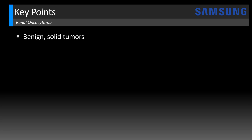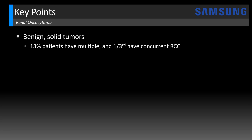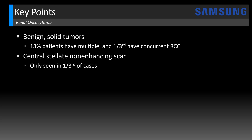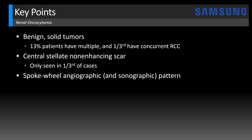Let's look at key points for oncocytoma. These are benign solid tumors. About 13% of patients will have multiple oncocytomas, and a third will have a concurrent renal cell carcinoma, so look closely at both kidneys. The central stellate non-enhancing scar, thought to characteristically describe renal oncocytoma, is actually only present in about a third of cases — usually in larger tumors, while smaller tumors under 3 centimeters tend to be more homogeneous. Remember the number one-third to recall these statistics.